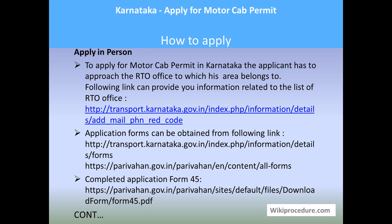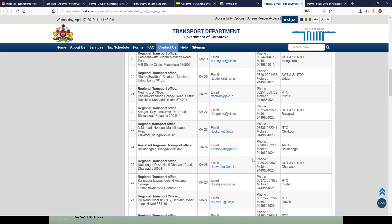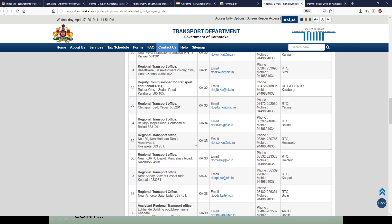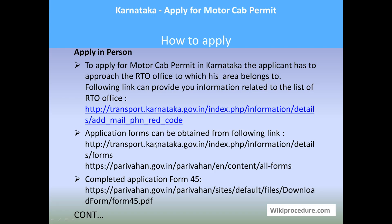To apply for a motor cab permit in Karnataka, the applicant has to go to the RTO office concerned for his area. A link is provided which will help you reach the contact page of the Karnataka state portal, giving details of RTO office addresses. Note the address concerned for your area and go to the office. You can download the application form using the link provided.